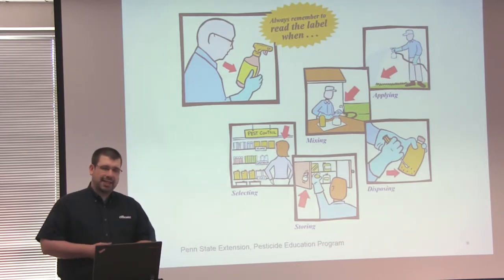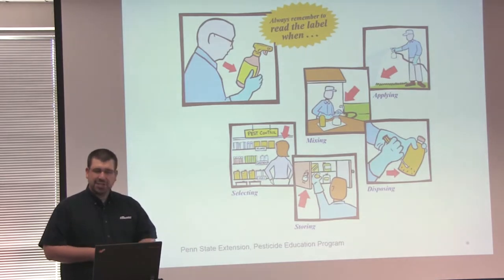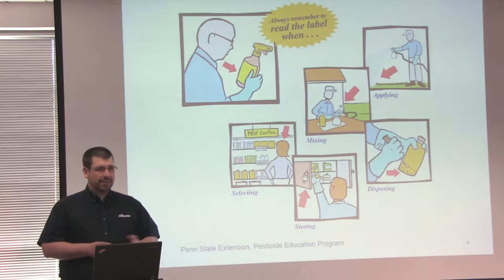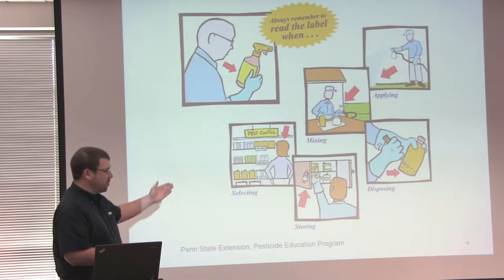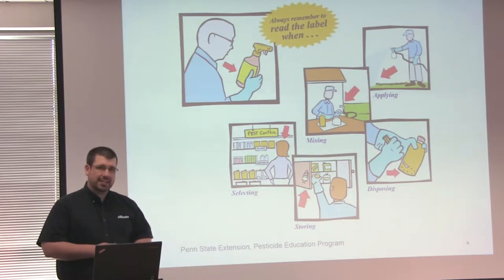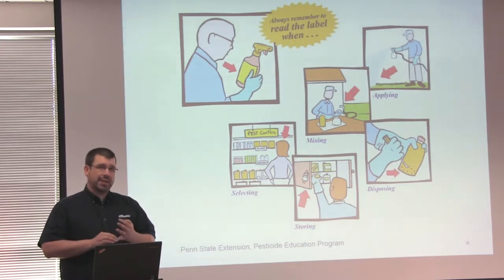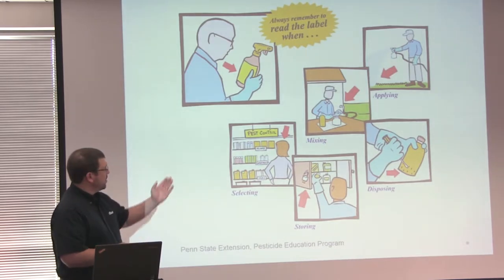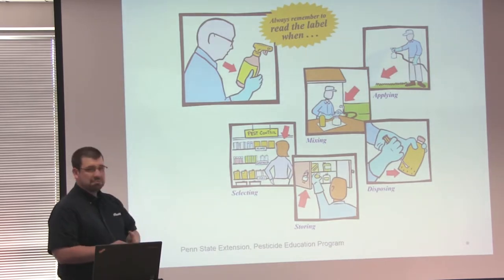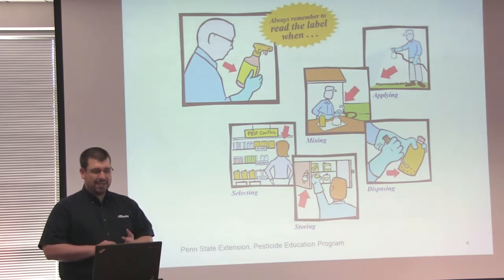We usually take a look at the label when we're actually mixing or applying the pesticide. However, there are other times that we should be looking at the label, such as when we're selecting the pesticide. We need to find out if the particular pest or the crop are on the label so we can apply to it. And mixing and applying, like I said before, very common.